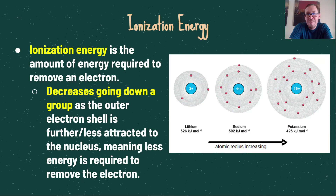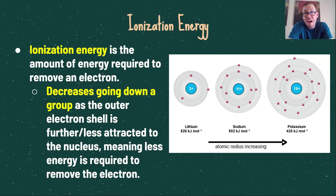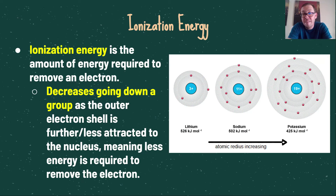Looking at some examples: lithium has an ionization energy of 526 kJ/mol — the energy required to remove that outermost electron. Sodium has an ionization energy of 502 kJ/mol; its valence electron is further from the nucleus and therefore requires less energy to remove. There is also more nuclear shielding with sodium. Continuing that trend, potassium has an ionization energy of about 525 kJ/mol to remove its outermost electron.